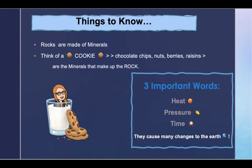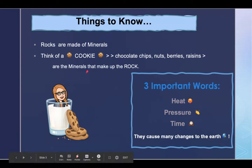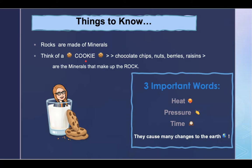Some things to know before we start our story, boys and girls, is that rocks are made of minerals. I'd like you to think of a cookie — any type of cookie. The chocolate chips, nuts, berries, raisins — those are the minerals that make up a rock. Think of the things inside the cookie as the minerals.